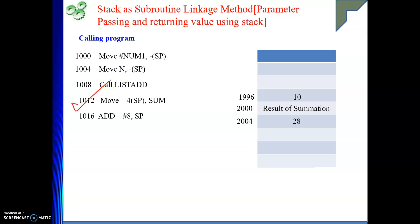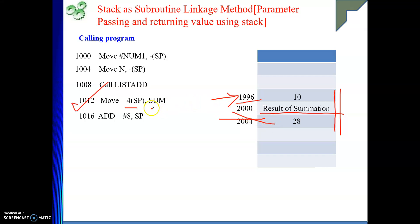After returning, the stack looks as it was after the parameters were pushed. SP is at 1996. The result is at address 2000. To retrieve it we use index addressing: SP + 4 gives address 2000, so we execute MOVE 4(SP), SUM — loading the summation result into the variable SUM. This is how we extract the return value from the stack.